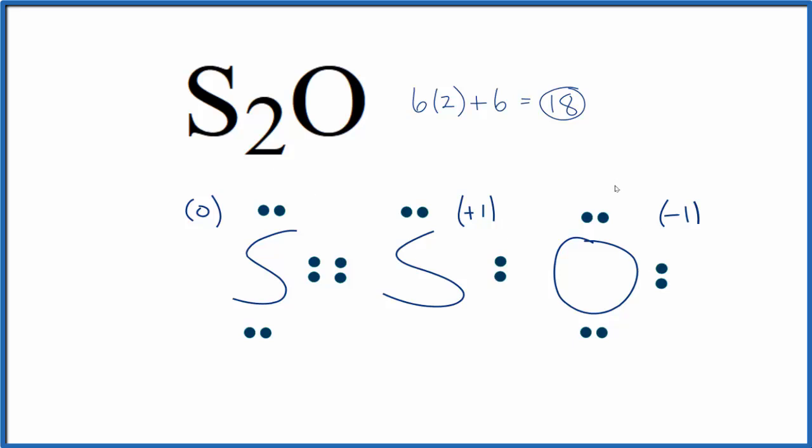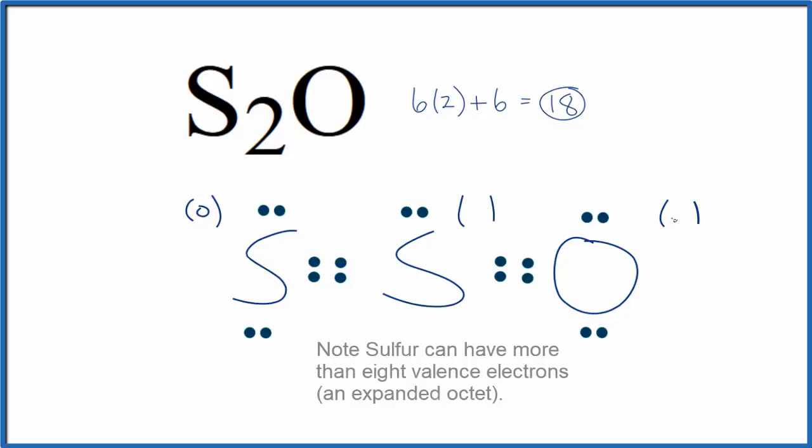We'd like our formal charges to be as close to zero as possible. If we moved this pair of electrons here to form a double bond, then this oxygen would be zero, and the sulfur in the center, that would be zero. So this is the most favorable or most likely Lewis structure for S2O.